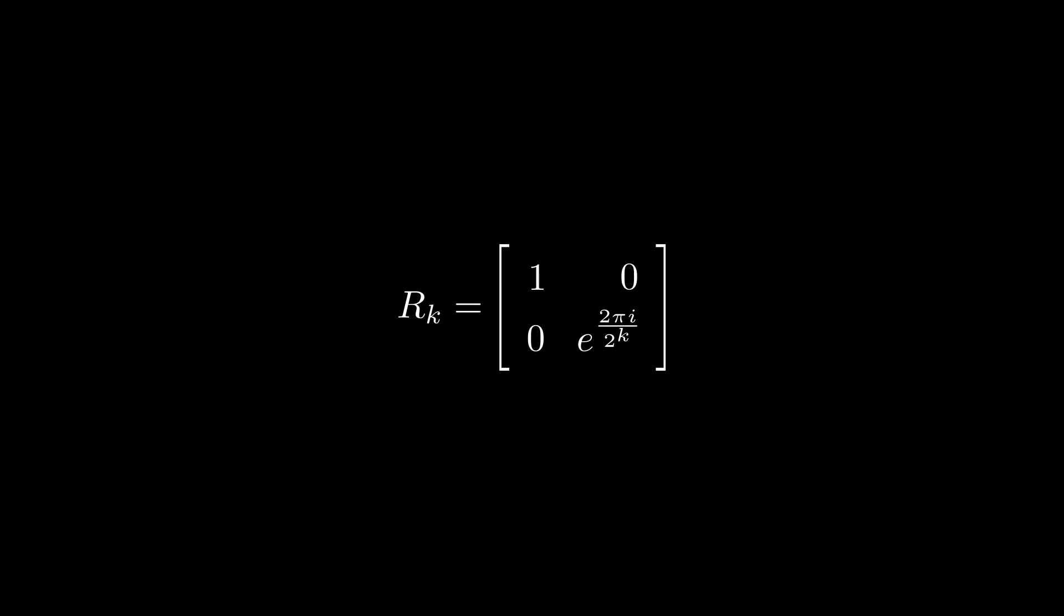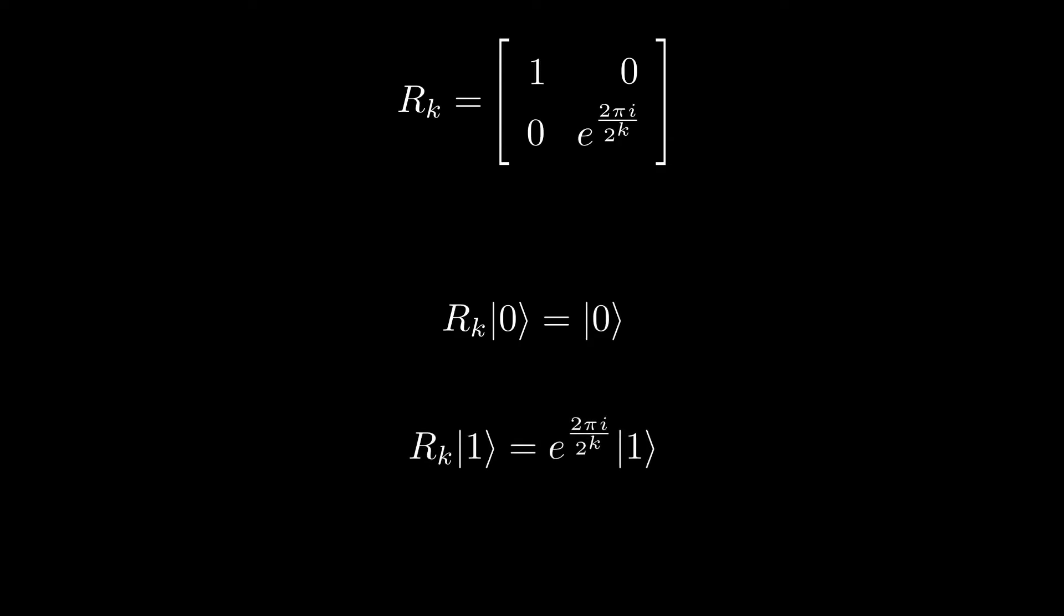This gate transforms the basis state 0 into 0 and 1 into e to the 2 pi over 2 to the k times 1, giving us a relative phase if applied to a qubit in superposition. The controlled version, like we have in this circuit, is the same as all the other controlled versions of other gates, only applying the gate if the control is a 1.